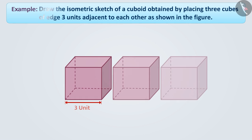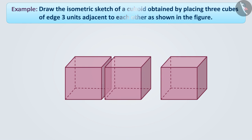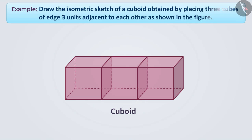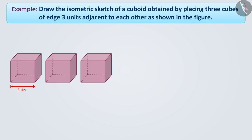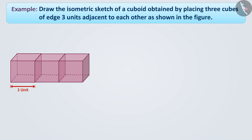Draw the isometric sketch of a cuboid obtained by placing 3 cubes of edge 3 units adjacent to each other as shown in the figure. The 3 cubes of edge 3 units are placed adjacent to each other in such a way that one face of one cube is adjacent to one face of the second cube. To draw the cuboid, first, we will draw a cube.